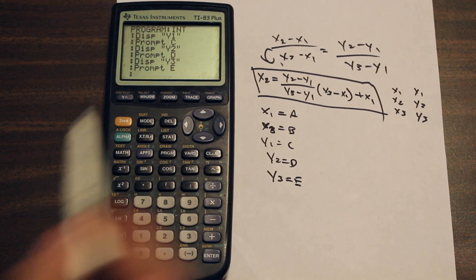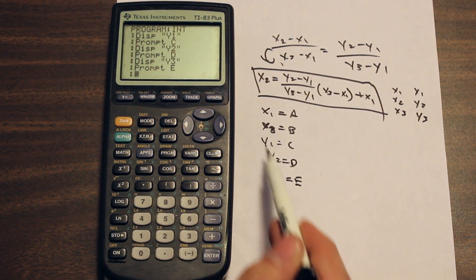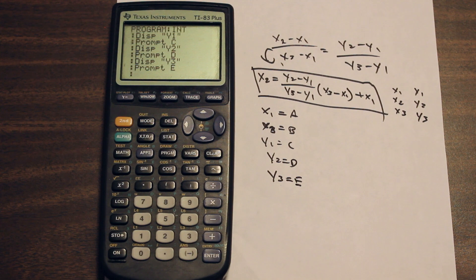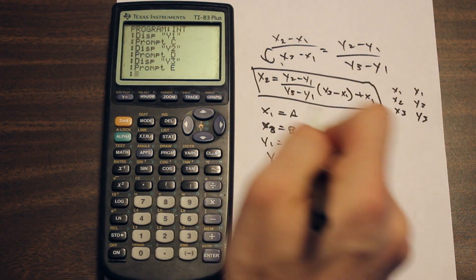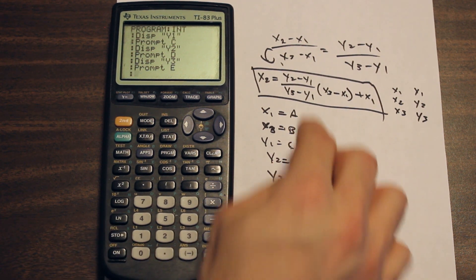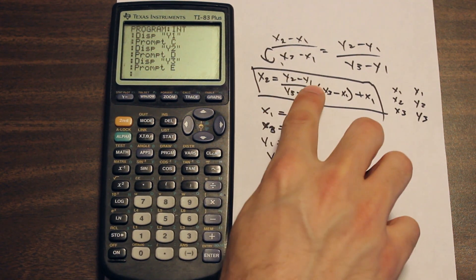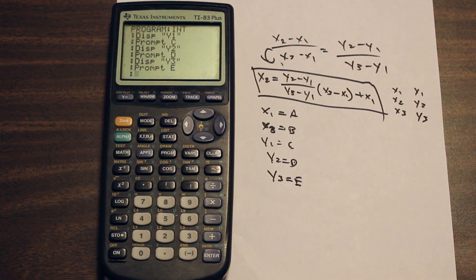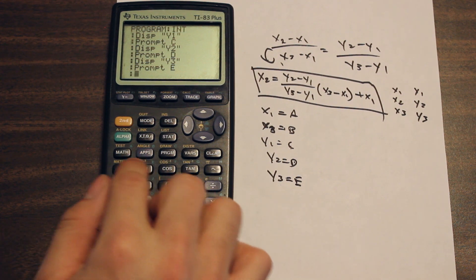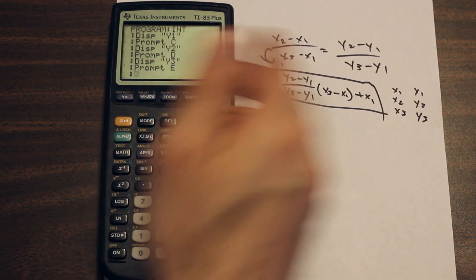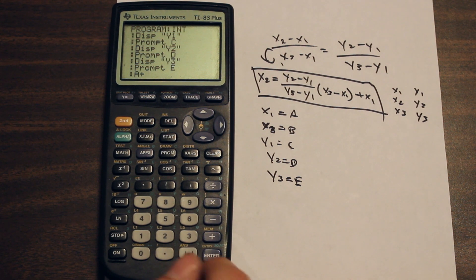We've had the calculator ask for all our variables and stored them in variables A through E in the calculator. We have our list so we know which letter correlates to which value. The next step is to put the right side of the interpolation equation into the calculator using those letters.